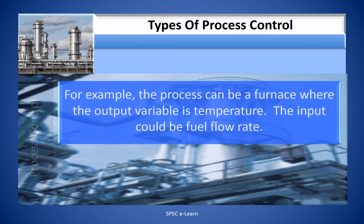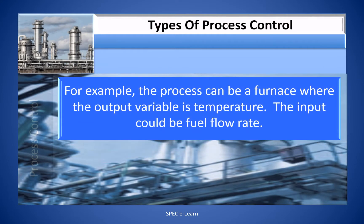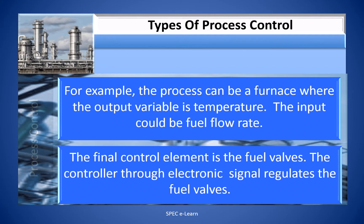For example, the process can be a furnace where the output variable is temperature. The input could be the fuel flow rate. The final control element is a fuel valve. The controller through electronic signal regulates the fuel valves.